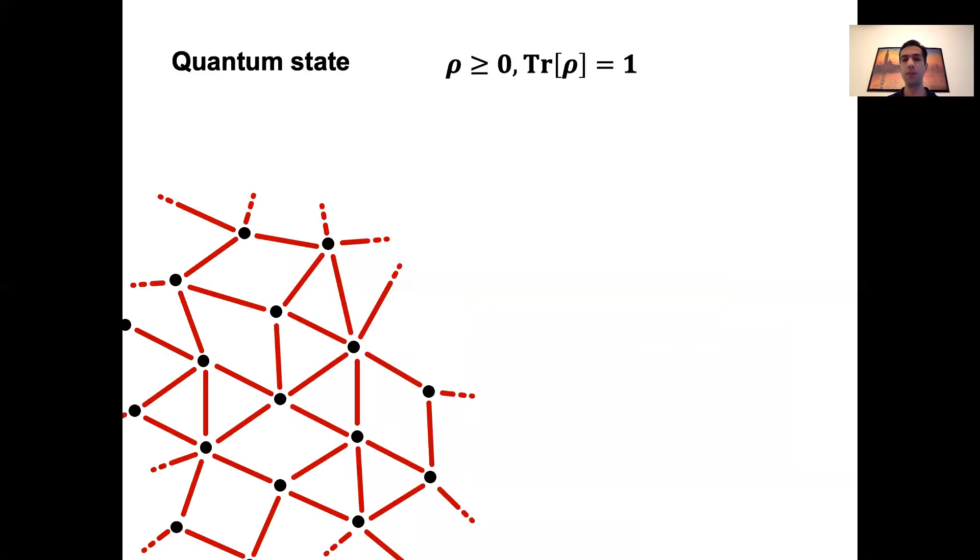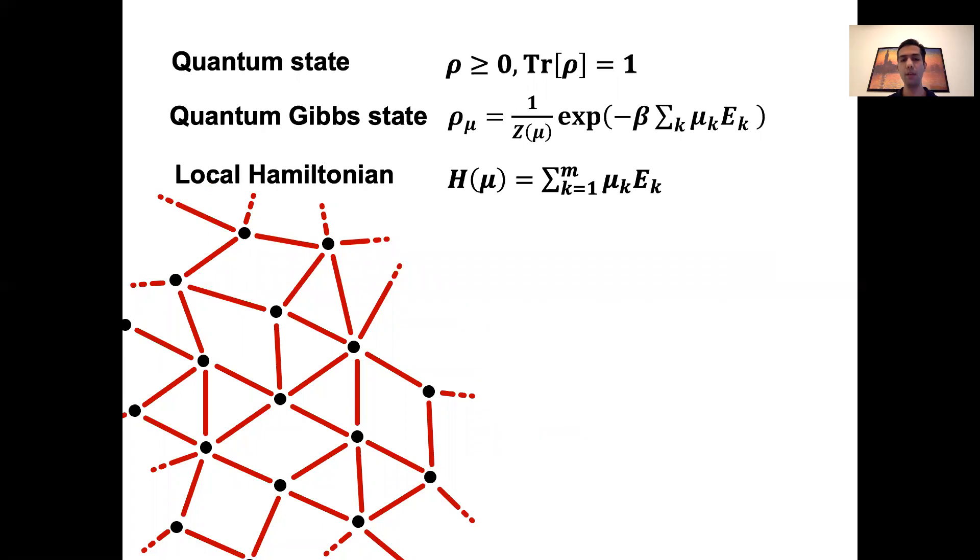So let me tell you more about the setup. In the quantum setting, instead of probability distributions, we deal with quantum states or density operators, which are positive semi-definite Hermitian operators with trace equals one. A special case of quantum states is the Gibbs state, which similar to Gibbs distributions in previous slides is defined as the exponential of a certain cost function. This cost function in physics is known as the Hamiltonian. It is a Hermitian operator with exponential size in the number of vertices. And it is a sum of local terms.